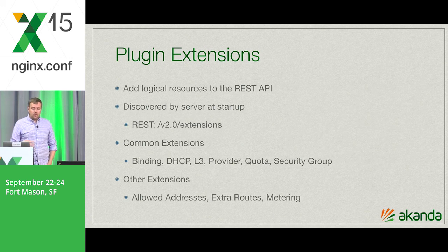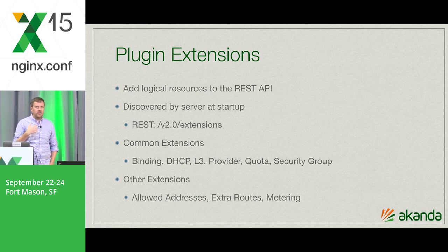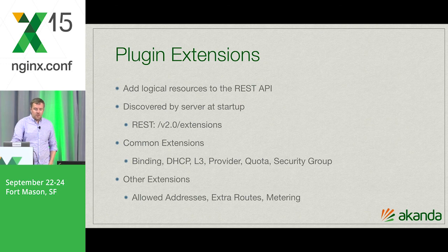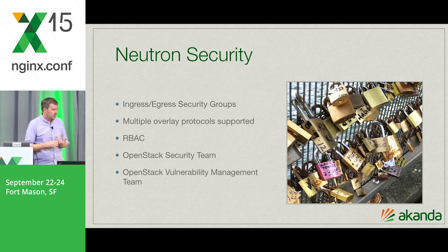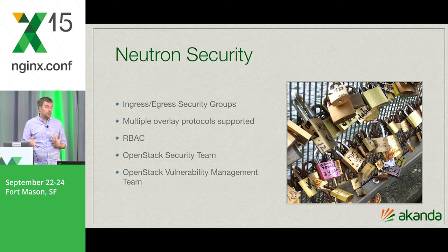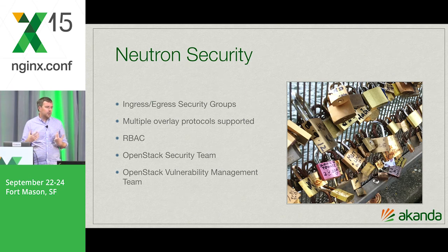Within those extensions, you're really adding logical resources — you add a load balancer to the API. Some of the other common extensions are DHCP, layer three routing, provider security groups, as well as extensions for security purposes like allowed address pairs to stop ARP spoofing, extra routes, and metering. Neutron supports a very robust security model in terms of both ingress and egress security groups, as well as multiple overlay support protocols so that you can run VXLAN, GENEV, and GRE tunneling.